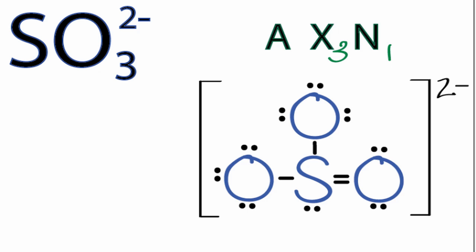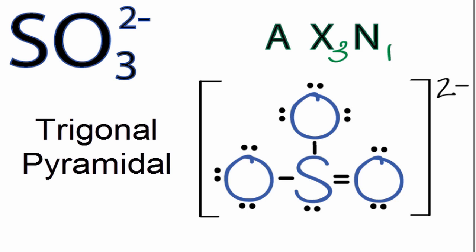You could have memorized that AX3N is trigonal pyramidal, or you could look it up in a table if you're allowed to do that.